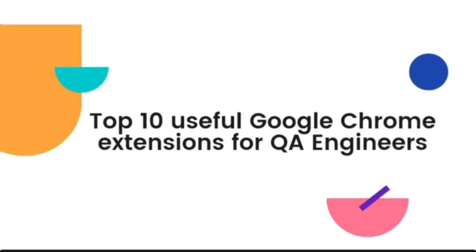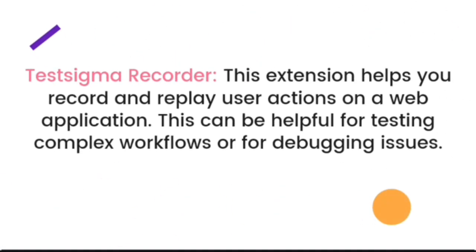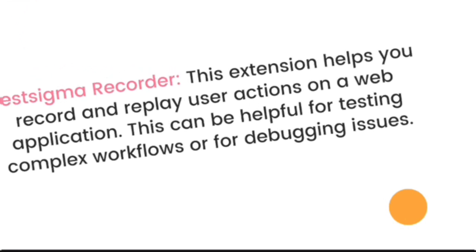10 Useful Google Chrome Extensions for QA Engineers. Test Sigma Recorder: This extension helps you record and replay user actions on a web application. This can be helpful for testing complex workflows or for debugging issues.